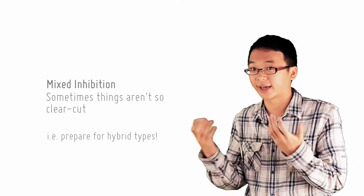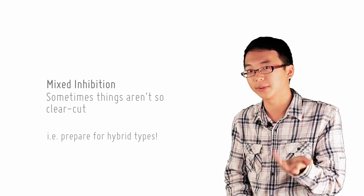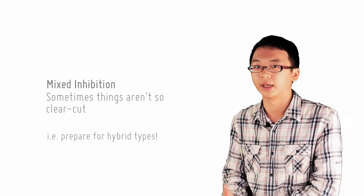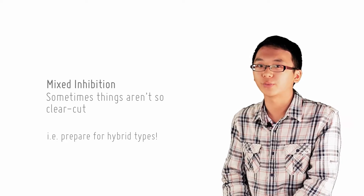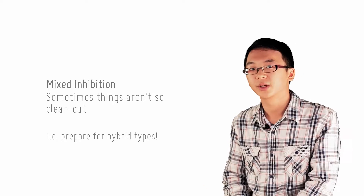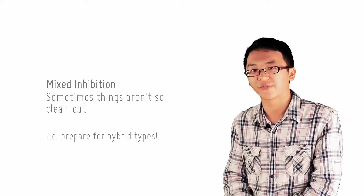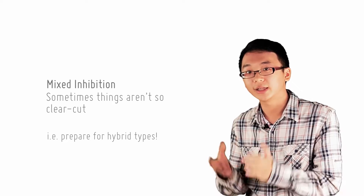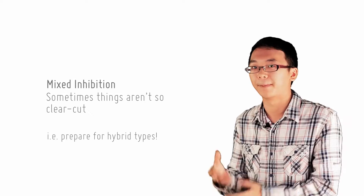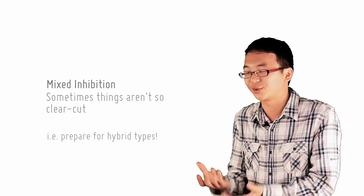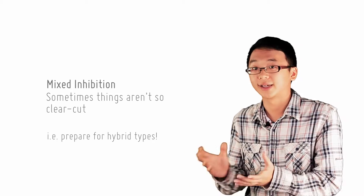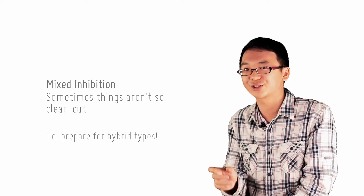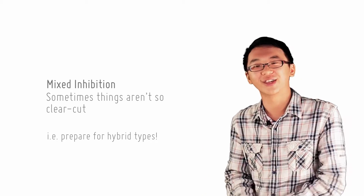They may overlap, and if you know the mechanism of action of the various types of inhibitors, then you would know that it is very possible for hybrid types of inhibitions to occur. This is what we term as mixed inhibition. The most common one is a mixture of competitive and uncompetitive inhibition, which means that the inhibitor can block the active site by binding, but can also bind to the enzyme-substrate complex. Take note that this is not non-competitive inhibition because there is competition for the active site involved.